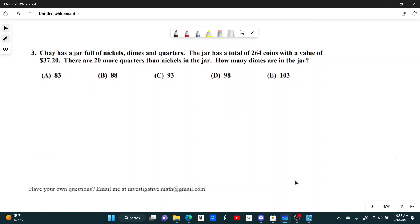Number three. J has a jar full of nickels, dimes, and quarters. The jar has a total of 264 coins with a value of $37.20. There are 20 more quarters than nickels in the jar. How many dimes are in the jar?